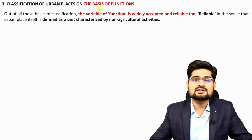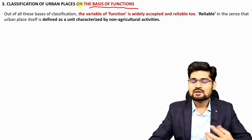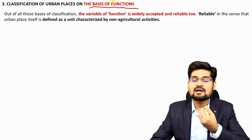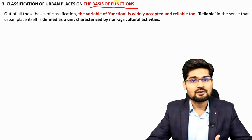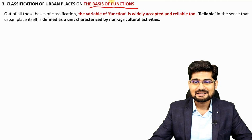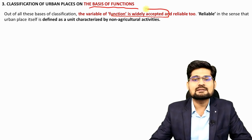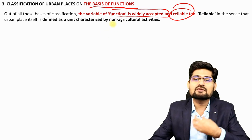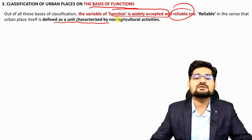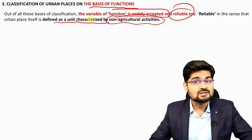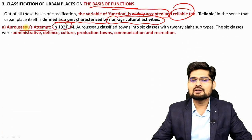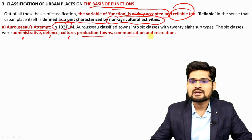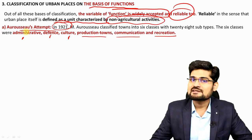The third kind of classification is on the basis of functions — functional classification. It talks about how a city develops through its functional characteristics: what services it provides and what is known for, what drives people to settle in the city. Arusso's attempt in 1921 talked about six classes: administrative towns, defense towns, cultural towns, production towns, communication towns and recreation towns. This was the first attempt at functional classification.